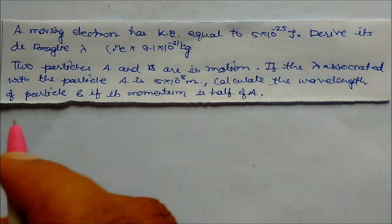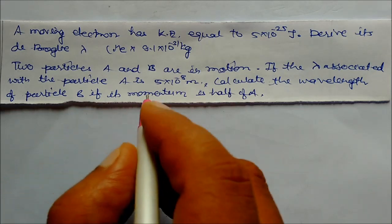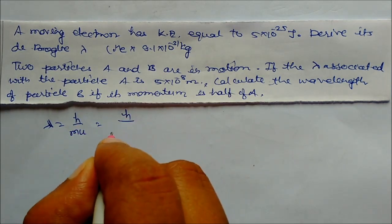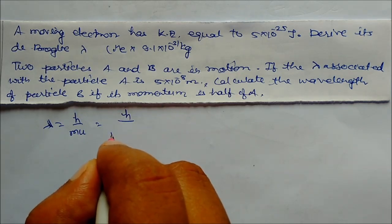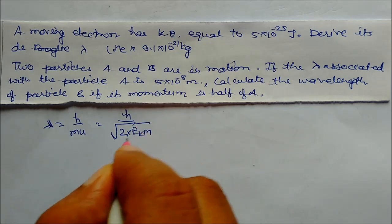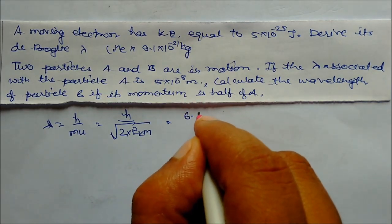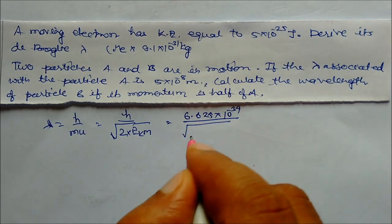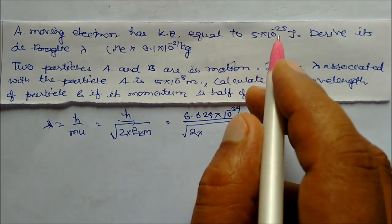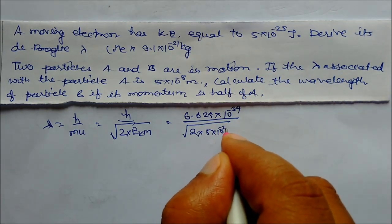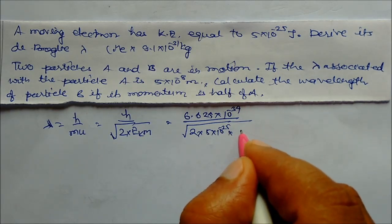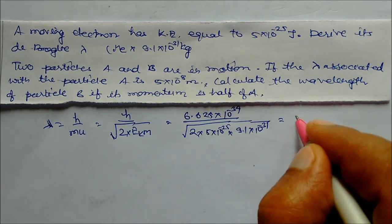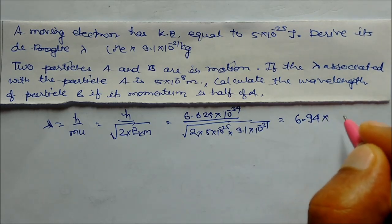The de Broglie wavelength lambda is equal to h by mv. In terms of kinetic energy, we can write lambda equal to h divided by the square root of 2 times kinetic energy times m. Putting in values: 6.625×10⁻³⁴ divided by square root of 2 times 5×10⁻²⁵ times mass of electron 9.1×10⁻³¹. On solving, we get lambda equal to 6.94×10⁻⁷ meters.